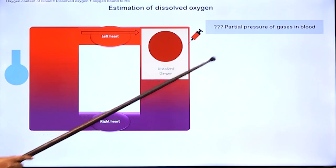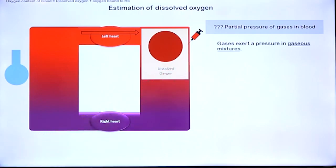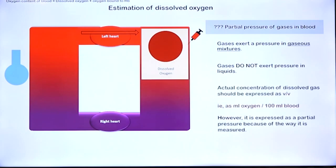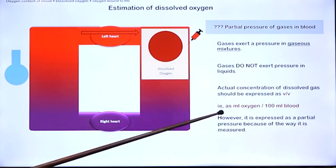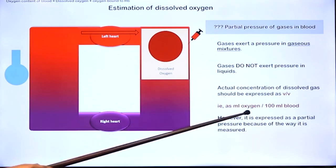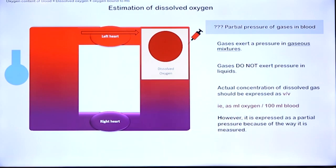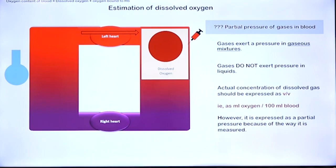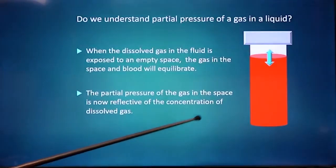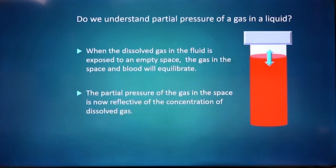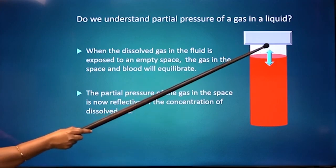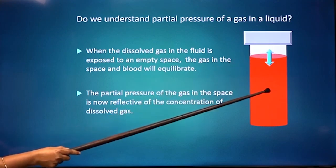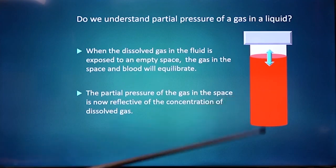To reiterate: gases exert a pressure or partial pressure only in gaseous mixtures — they do not exert pressure in liquids. The actual concentration of a dissolved gas should be expressed as milliliters of gas per unit volume of liquid. However, we express dissolved oxygen in blood as a partial pressure because of the way it is measured — the gas is allowed to equilibrate with a small gaseous space, and the partial pressure in that space reflects the concentration of dissolved gas.